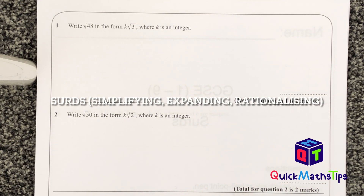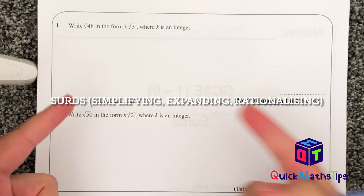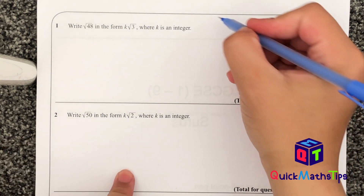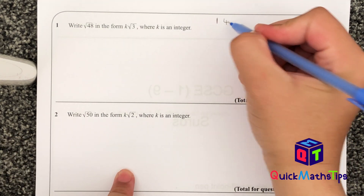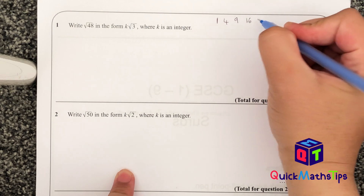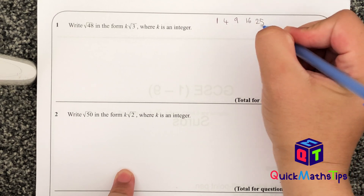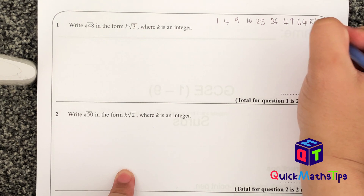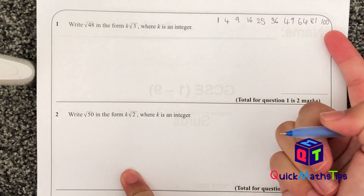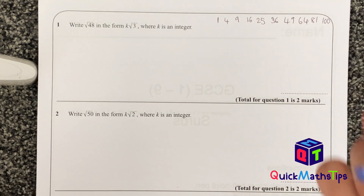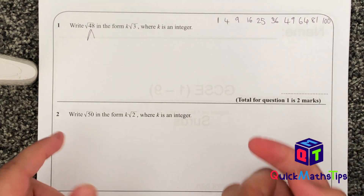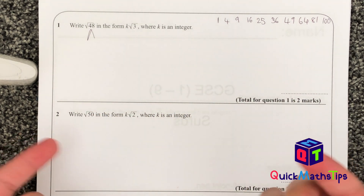Today I'm going to go through surds. When it comes to simplifying surds we need to know our square numbers really well. At the top I'm going to write out my square numbers: 1, 4, 9, 16, 25, 36, 49, 64, 81, and 100. You also need to know how to do factor trees.